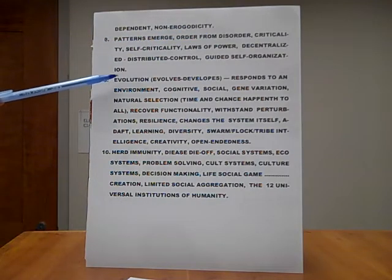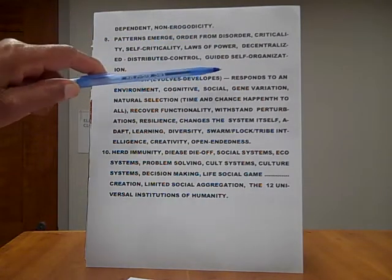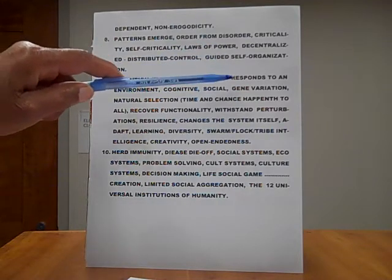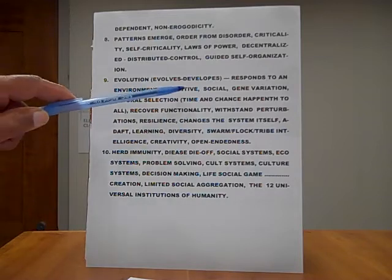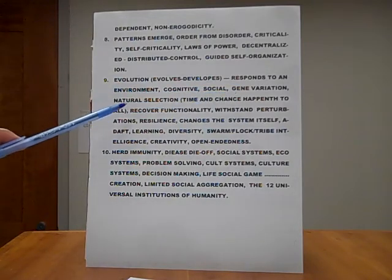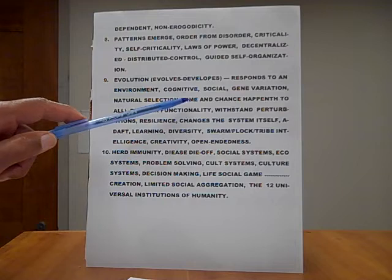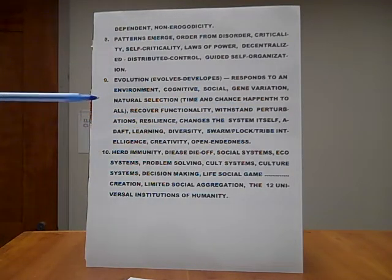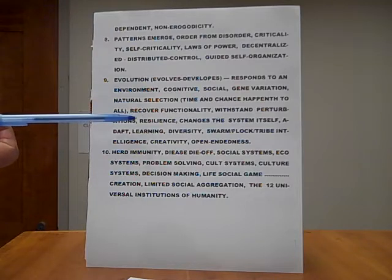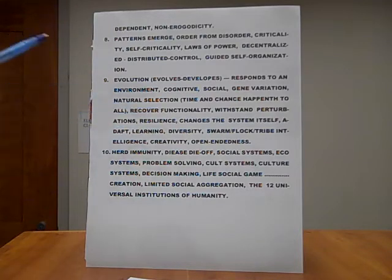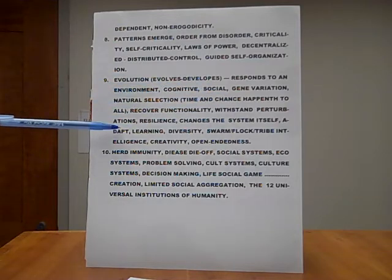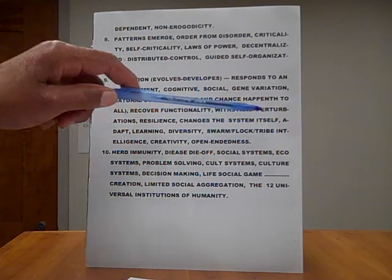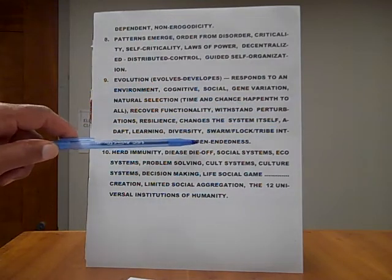Number nine, evolution. The science of evolution evolves, develops. And evolution is made up of several minutes, more than this, but nonetheless, response to an environment. Cognitive, social, gene variation, natural selection. That simply means time and chance, happiness to all. Recover functionality, withstand perturbations, resilient, changes in the system itself, adapt, learning, diversity, swarm, flock, tribe, intelligence, creativity, open-endedness.